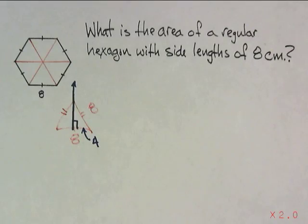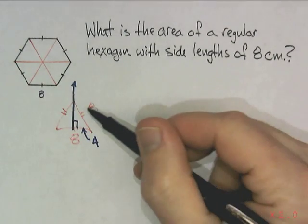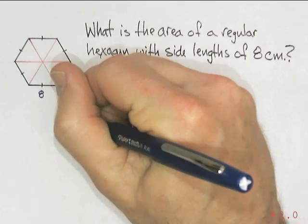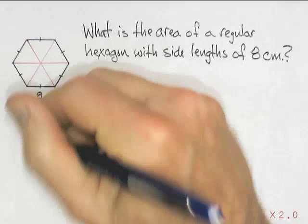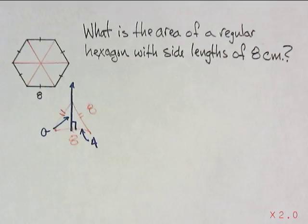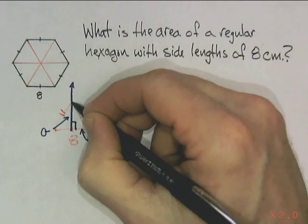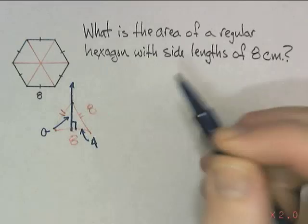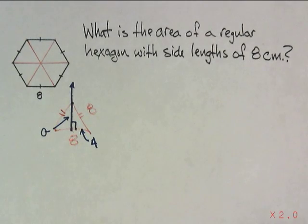And it is a right triangle. One leg is 4, the hypotenuse is 8, and the last side right there, I'll call it A, is what I need to find. So that's the height of the triangle. If I find that, I can find the area of the triangle. If I find the area of the triangle, I can find the area of the hexagon.